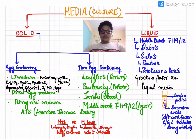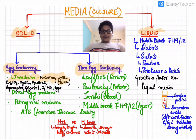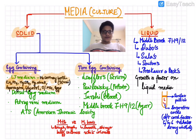Culture media are broadly classified into solid and liquid. Solid media are further divided into egg-containing and non-egg-containing. The Löwenstein-Jensen (LJ) medium is the main egg-containing medium, kept in a 30 ml McCartney bottle, containing potassium dihydrogen phosphate, magnesium sulfate, magnesium citrate, asparagine, glycerol, 2% malachite green, and eggs. Other egg-containing media are Dorset egg medium, Petrognani medium, and the ATS (American Thoracic Society) medium.